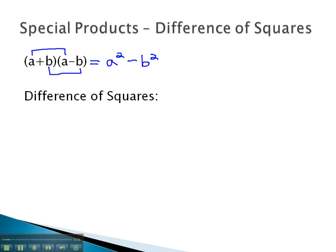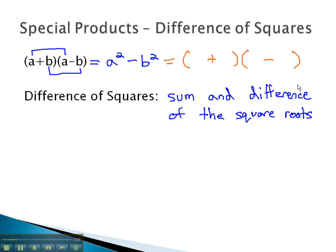A difference of squares will always factor to the sum and difference of the square roots. In other words, if we can take the square root of both terms, and there's a subtraction between them, we have a difference of squares. This will always factor to a sum and a difference of the square roots. The square roots, in this case, are a and b.